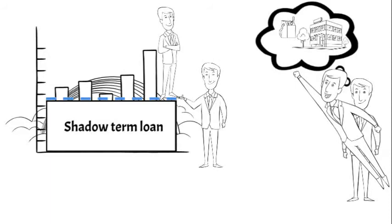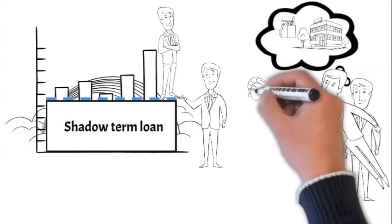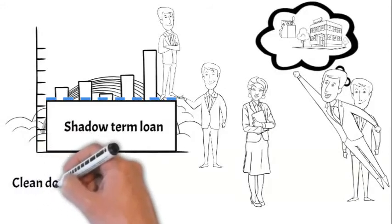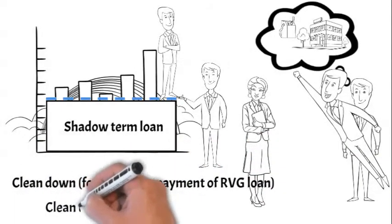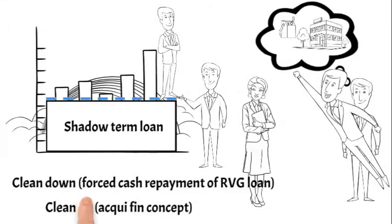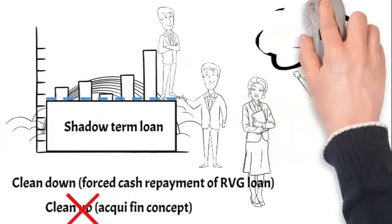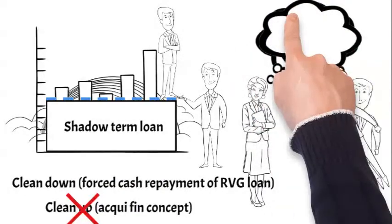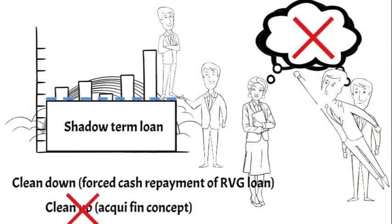This also happened in the past, and in order to prevent this, facility agreements sometimes contain so-called clean down provision, which is not to be confused with clean up provision, which is a concept that we will discuss in relation to acquisition finance. In accordance with the clean down provisions, the borrower is required once during a certain period of time to repay the revolving loan in cash either in full or in a substantial part. This period is standardly set to one year, which kind of makes sense when we realize that a revolving facility is used to finance net working capital which consists of current assets, and by definition current assets are assets that are expected to be converted into cash within one year.